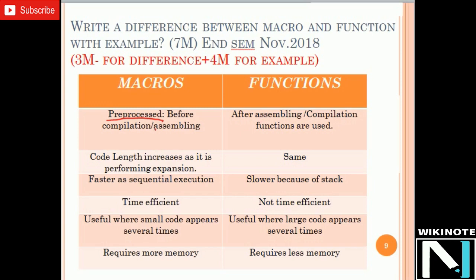Second: the code length in case of a macro gets expanded, because we perform the operation of expansion on macros, which is why the code length increases. In the case of a function, we do not expand the program, which is why the code length remains the same as it was before.